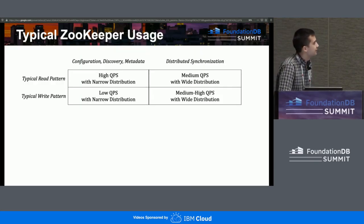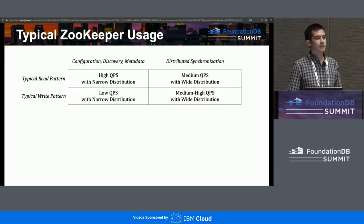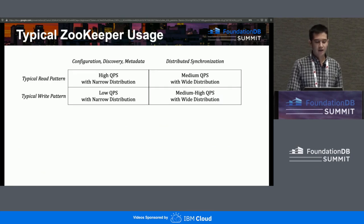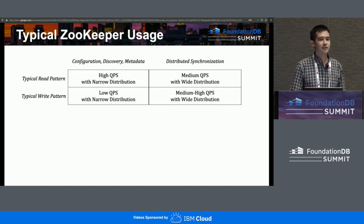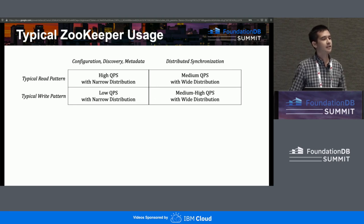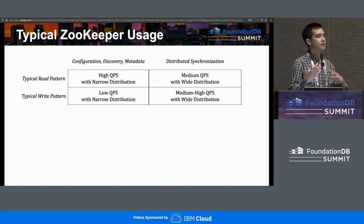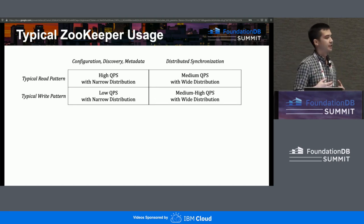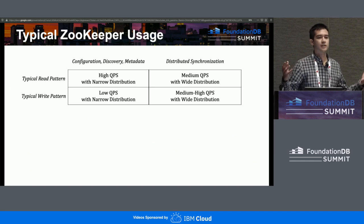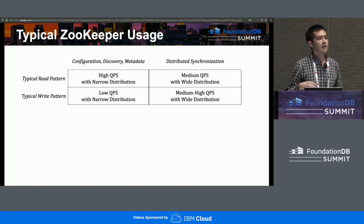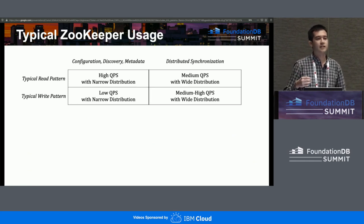Zookeeper itself is a distributed system. It's open source, run by Apache these days. Their tagline is that distributed systems are a zoo, and therefore you want a Zookeeper. The idea is that it helps offload certain responsibilities of a larger system, and in my mind it maps onto two different types of access patterns and two usages.